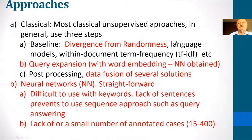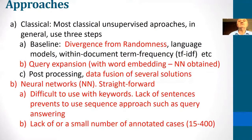Up to 2018, the prevailing methods of information retrieval were classical ones. They generally use three stages: a baseline according to some theoretical method — for example, divergence from randomness — then query expansion where embeddings are used. Neural networks have some problems because they are difficult to use with keywords, and also there exists a lack of annotated resources. The number of queries usually does not exceed several hundred, and in the medical domain it does not exceed 50.